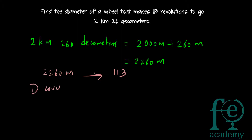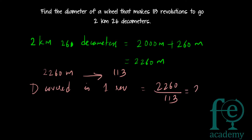The distance covered in one revolution equals 2260 divided by 113, which gives 20 meters. So 20 meters is the distance covered in one revolution. Since distance covered in one revolution equals the circumference of the wheel, we can now set up the equation.